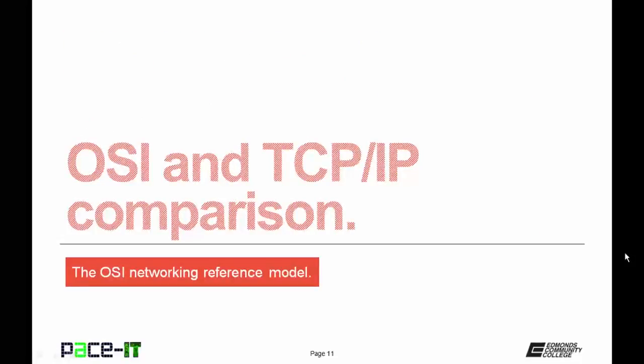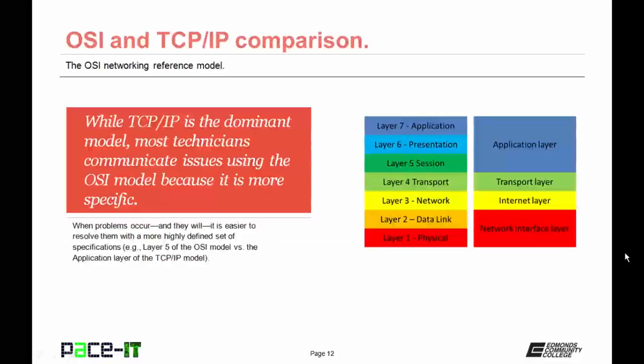Now let's do a comparison between the OSI and TCP-IP reference models. While TCP-IP is the dominant model, most technicians communicate issues using the OSI model because it is more specific. When a problem occurs, it is easier to resolve issues with the more highly defined set of specifications of the OSI model versus the specifications of the TCP-IP model.